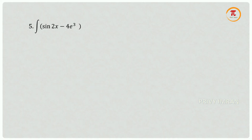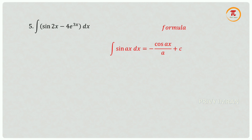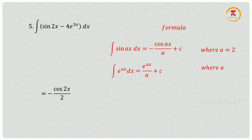Question number 5: integration of sin 2x minus 4 e power 3x dx. For sin 2x, using integration of sin ax dx equals minus cos ax divided by a plus c where a equals 2, gives minus cos 2x divided by 2. For the exponential term, using integration of e power ax dx equals e power ax divided by a plus c where a equals 3, the full answer is minus cos 2x divided by 2 minus 4 e power 3x divided by 3 plus c.